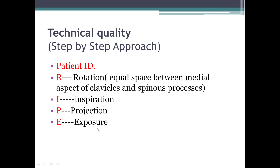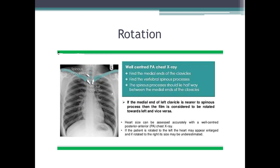In a well-centered PA chest X-ray with no rotation, the spinous process should be halfway between the medial ends of the clavicles. Here we can see the medial end of the clavicle and the spinous process — they are equidistant from each other, so this is a well-centered chest X-ray. If the medial end of the left clavicle is nearer to the spinous process, the film is considered rotated towards the left, and vice versa.